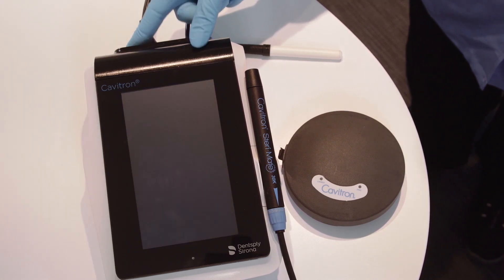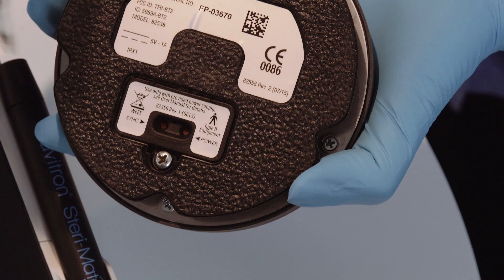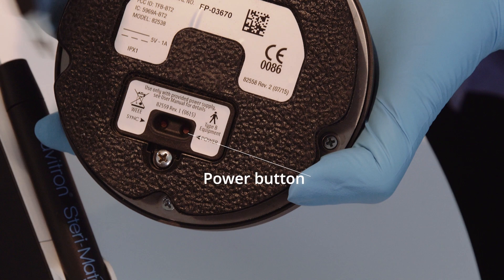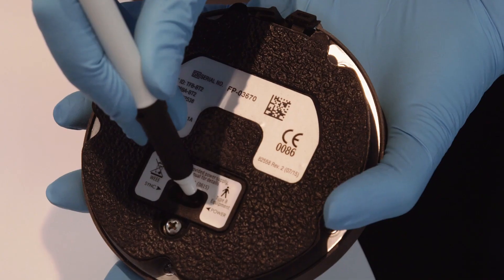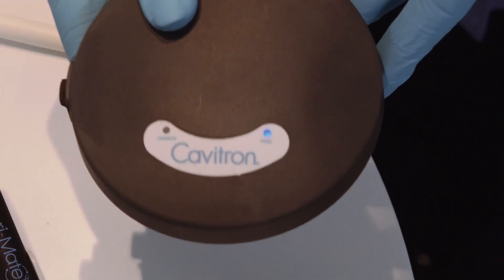To synchronize your foot pedal, begin by turning on the main power switch located at the rear of the system to the on position. The main screen will appear. This is also referred to as the scaling menu screen. Next, turn on the foot pedal by pressing the power button on the bottom of the foot pedal and hold for at least three seconds. A light on the top of the foot pedal will illuminate to verify power.